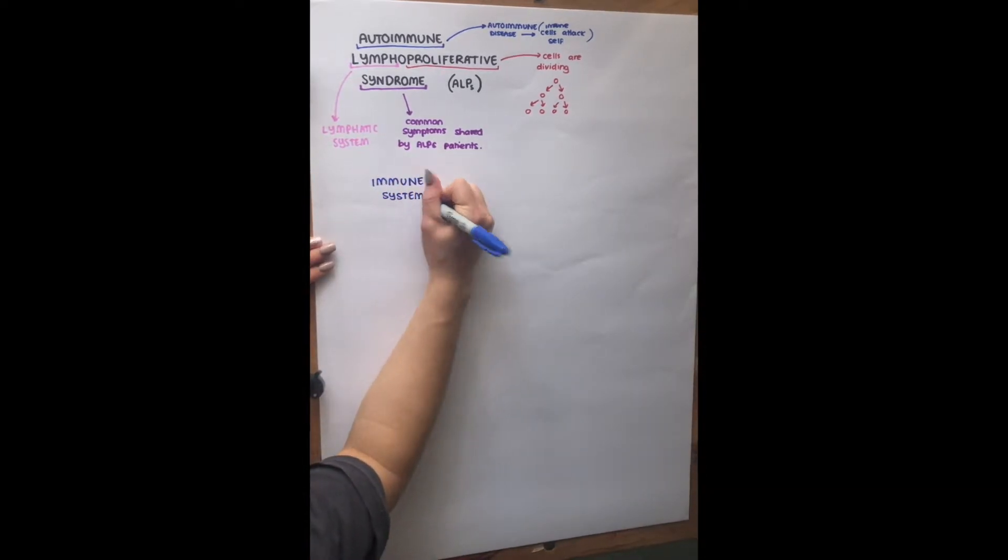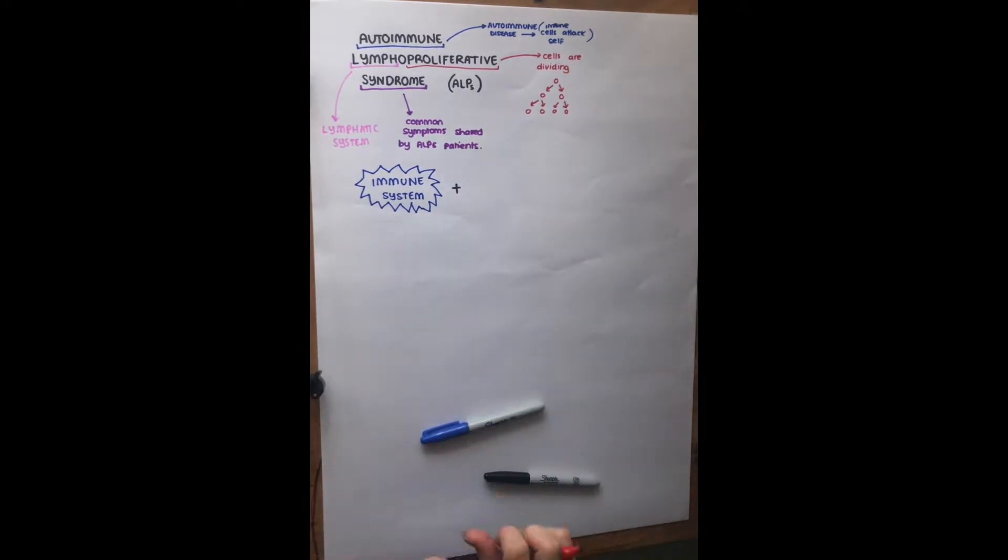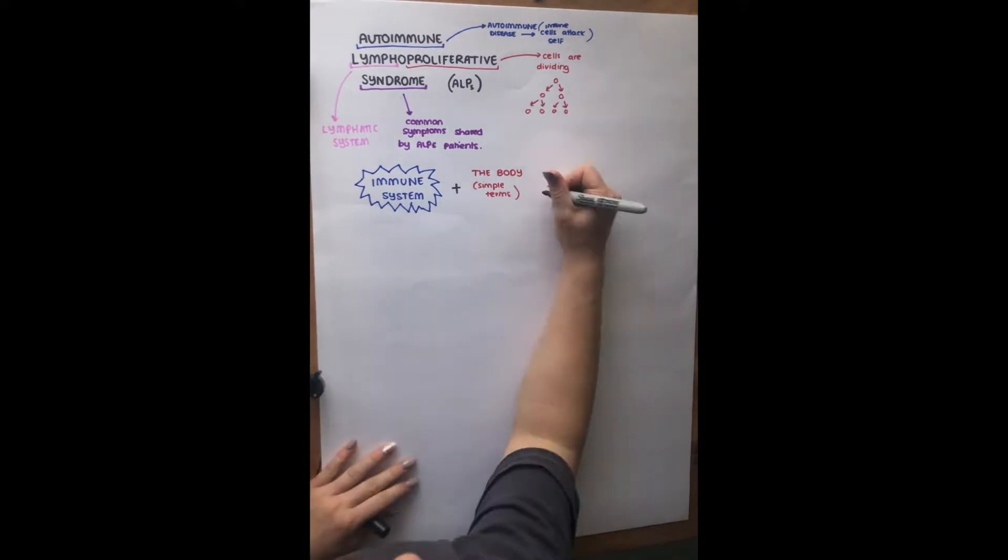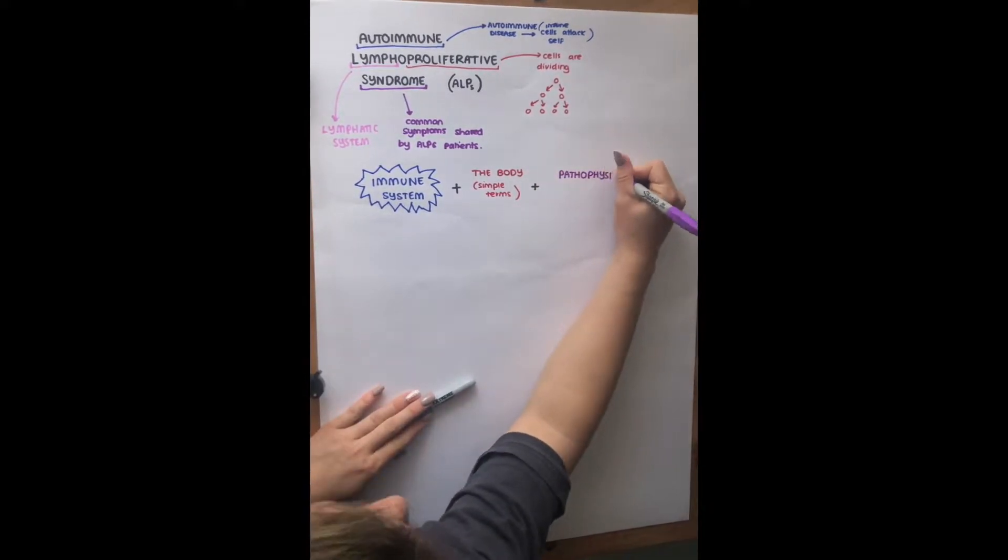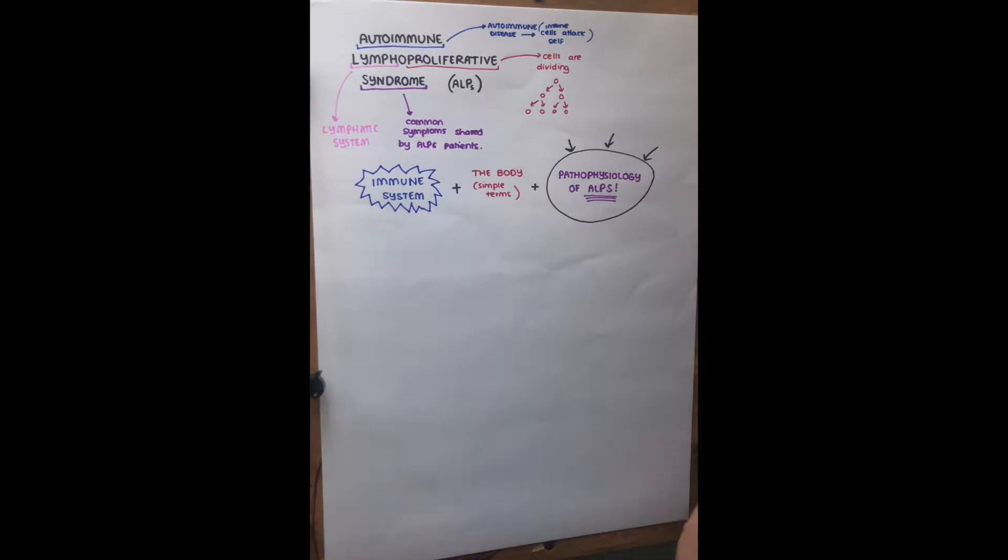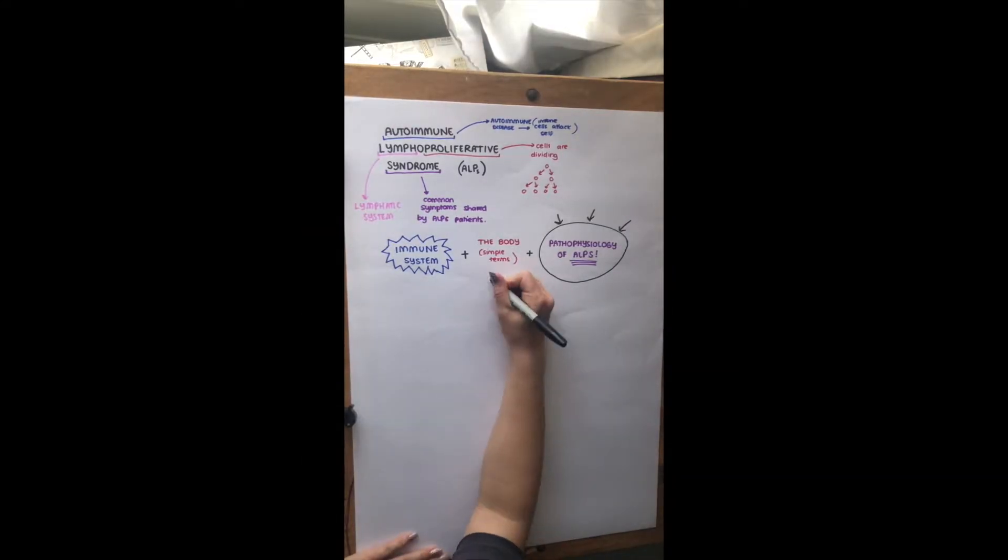So to be able to discuss ALPS, I'm going to go over three parts. Firstly, I will go over simpler terms and then I will go to the pathophysiology of ALPS and what actually causes it. So I'm going to start off with the body in simple terms, then the immune system, and then once we've understood those basic concepts, we'll go over the pathophysiology of ALPS. For the body in simple terms, I'm mainly going to talk about organs and their functions and what makes up those organs, because this is how we can understand how ALPS affects these organs.